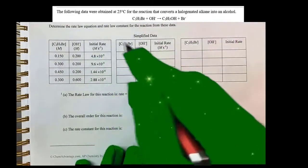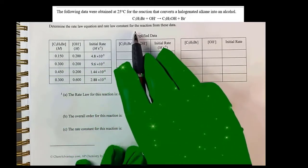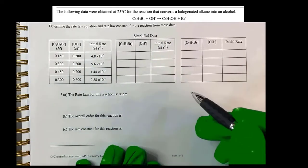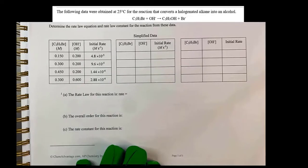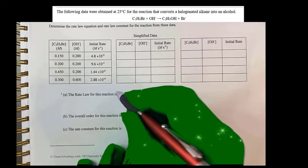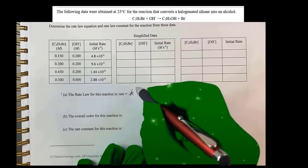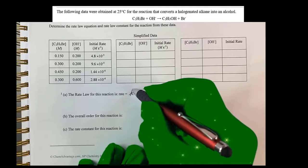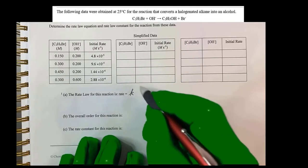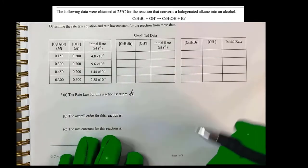The first question is determine the rate law equation and the rate constant for the reaction from these data. What is the rate law for this reaction? We can pick that up pretty quickly because we know that for any reaction, our rate law will be equal to a constant, lowercase k. This will be good for a specific temperature.